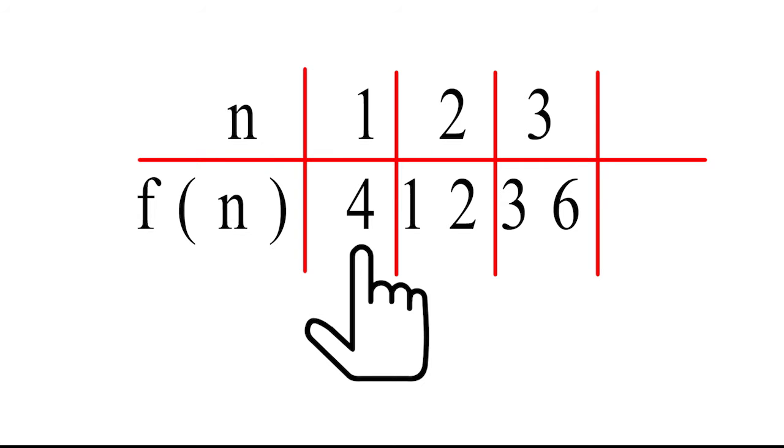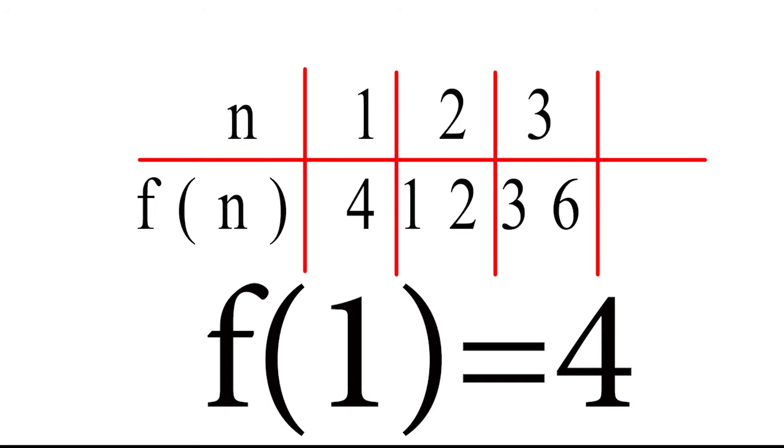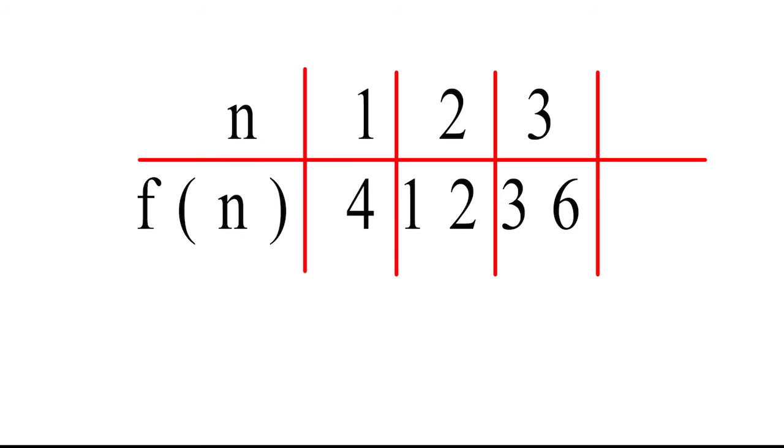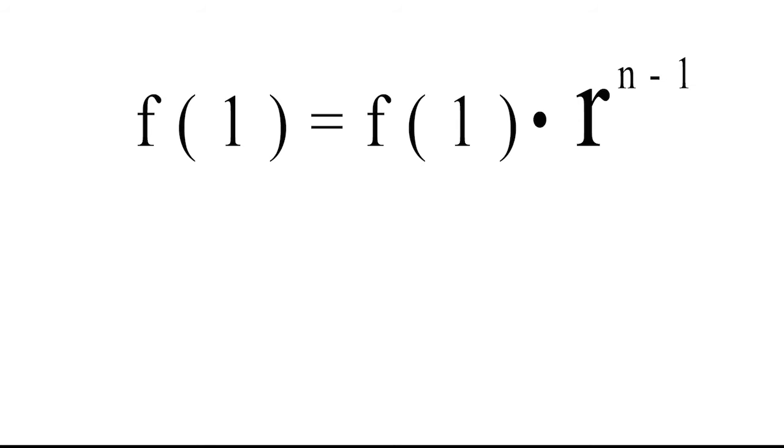So, f(1) equals 4. Now that you have r equals 3, your common ratio, and you have identified the first number in the sequence. Since f(1) equals 4, you can plug it into the equation.